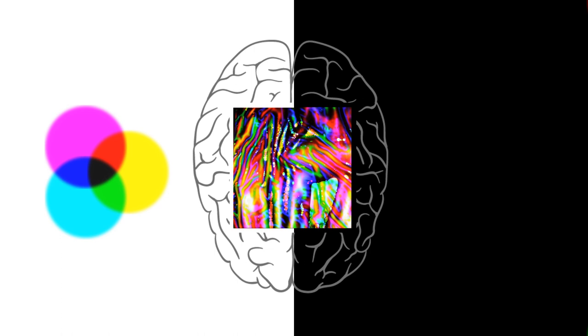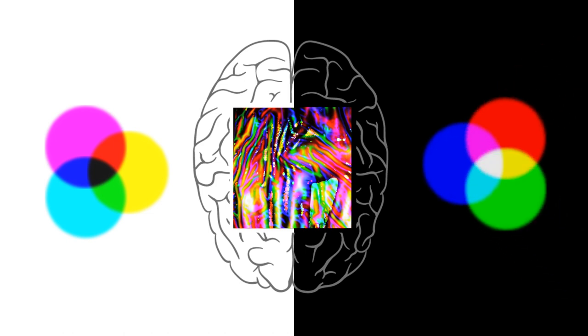Or we can start with a dark wall and build up colors by adding red, green, and blue, going from the real to the virtual.